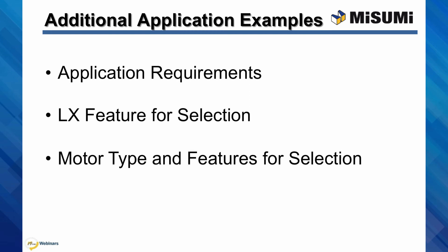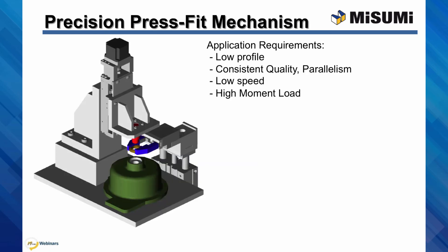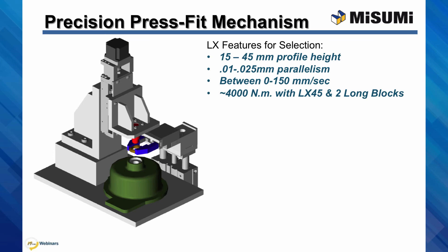Now that we've discussed sizing and selection of Misumi's LX Precision Actuators, let's take a look at a few additional application examples. For each one, we'll review the application requirements, the particular LX features for selection, and finish with a brief overview of positioning motor types. The first example is a precision press-fit mechanism. This requires a low profile design, consistent quality and parallelism, the ability to move at a low speed, and handle a high moment load. The LX is a good fit for this due to sizes as small as 15 mm profile height, parallelism as low as 10 microns, with a precision ball screw able to operate between 0 and 150 mm per second, and able to handle nearly 4,000 Nm moment load with the LX45 and two long blocks selected.